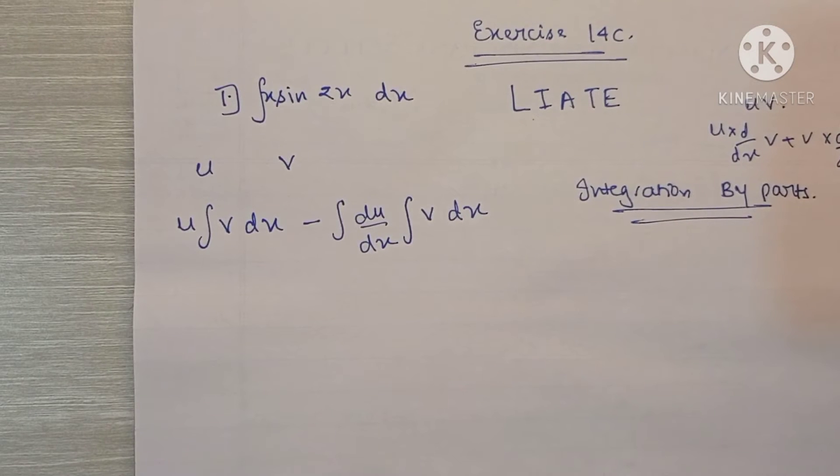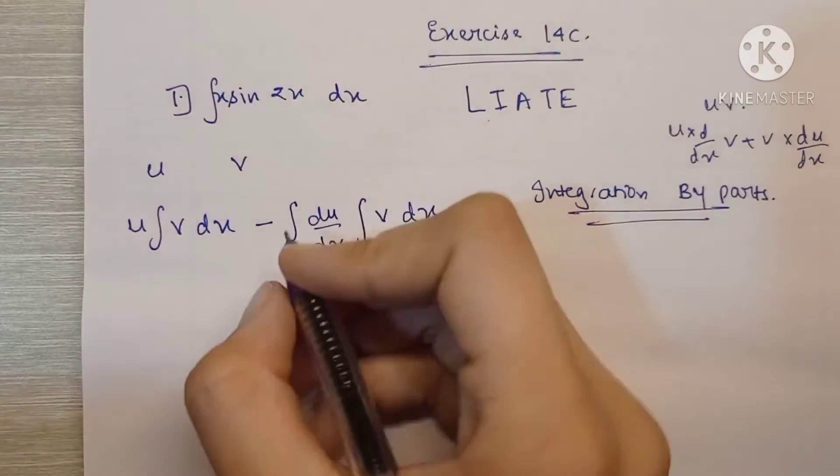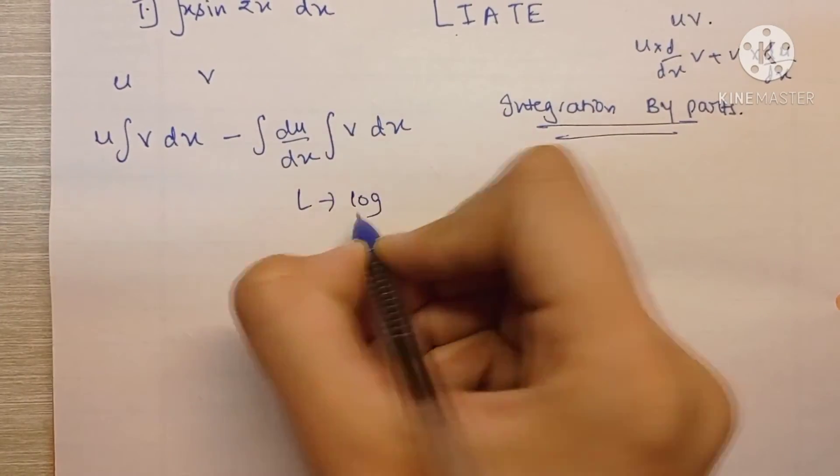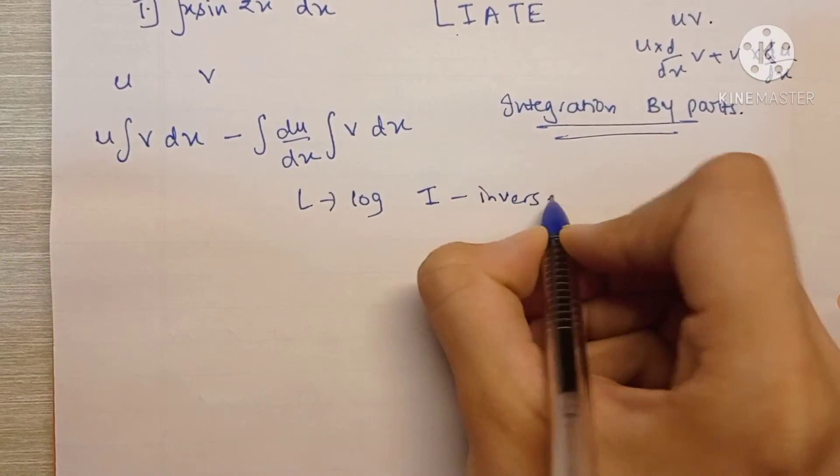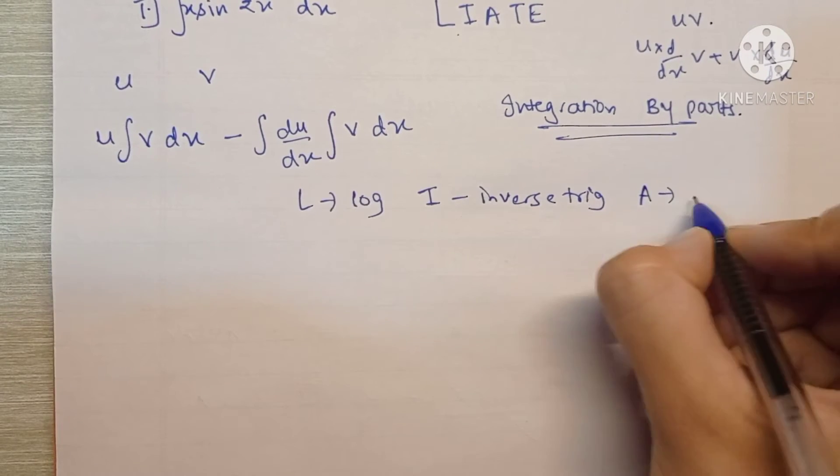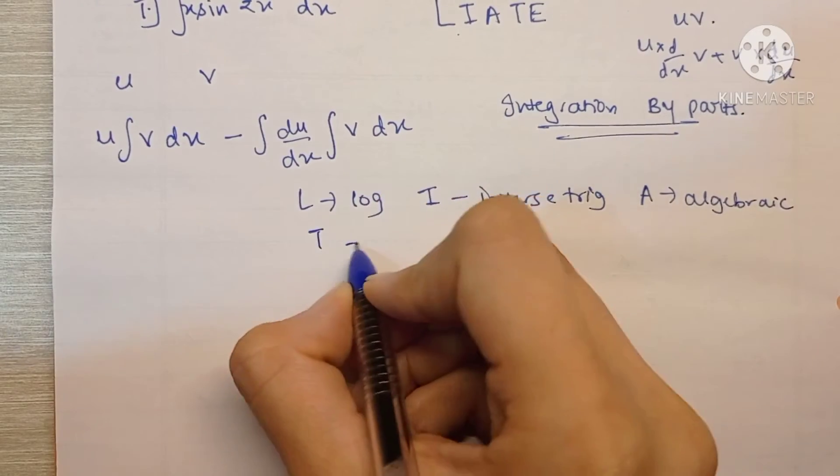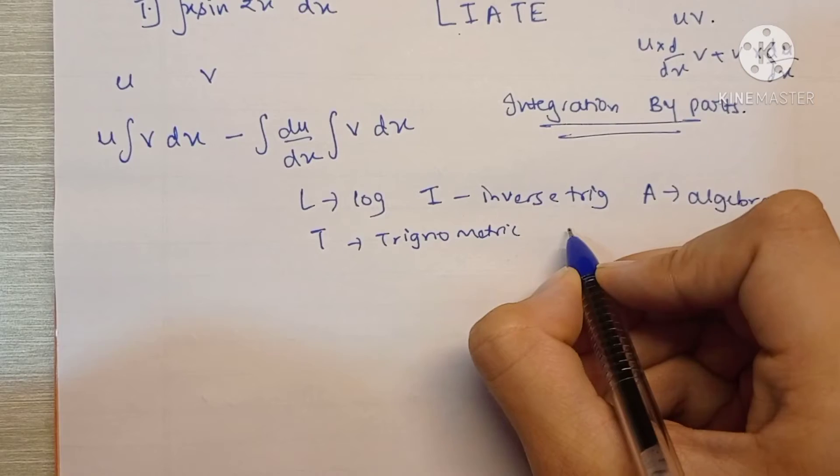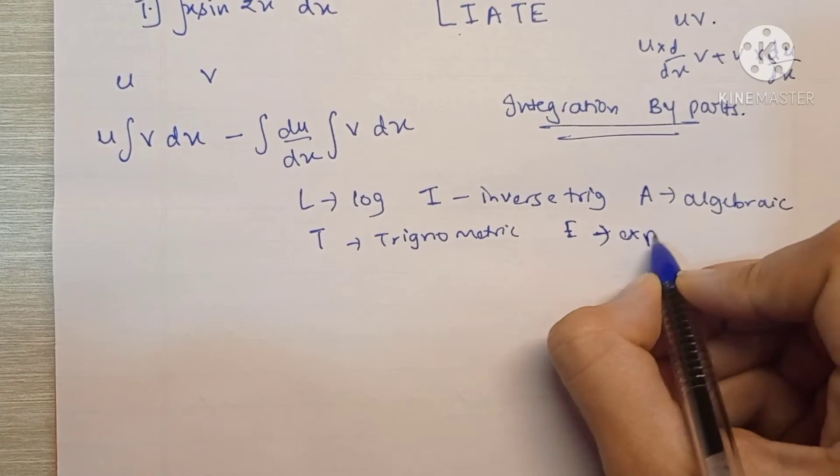So LIATE gives the preference of the first function. So L stands for log, I stands for inverse trigonometric, inverse trigonometric functions, A stands for algebraic functions, and then T stands for normal trigonometric functions, and E stands for exponential functions, that is E raised to something.